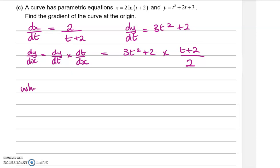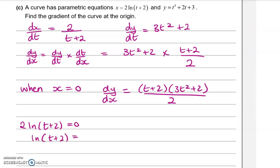Then we want to know the gradient of the curve at the origin. So this is when X equals zero, dy/dx will be equal to (t+2)(3t squared plus 2) over 2. But we don't know what T is yet. So we need to work out at X equals zero, what would T be? So if X was zero, 2 ln(t+2) would be equal to zero. So ln(t+2) equals zero. Raise both sides to base e to get rid of that ln. Anything to the power of zero is one. So T plus 2 equals one, so T is equal to minus one.